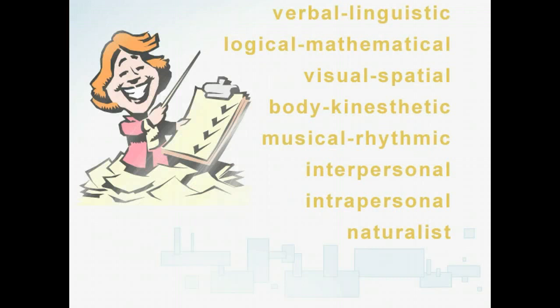So what are the eight intelligence types according to Gardner? They are verbal linguistic, logical mathematical, visual spatial, body kinesthetic, musical rhythmic, interpersonal, intrapersonal, and naturalist. We'll learn more about these a little later in the lesson.